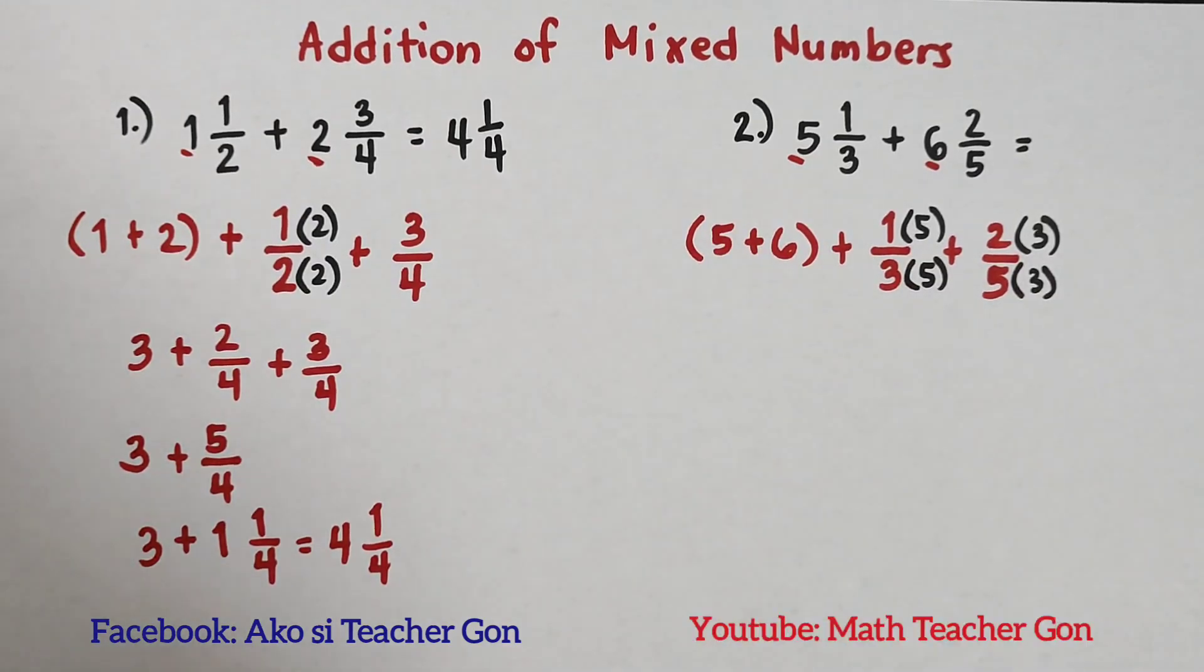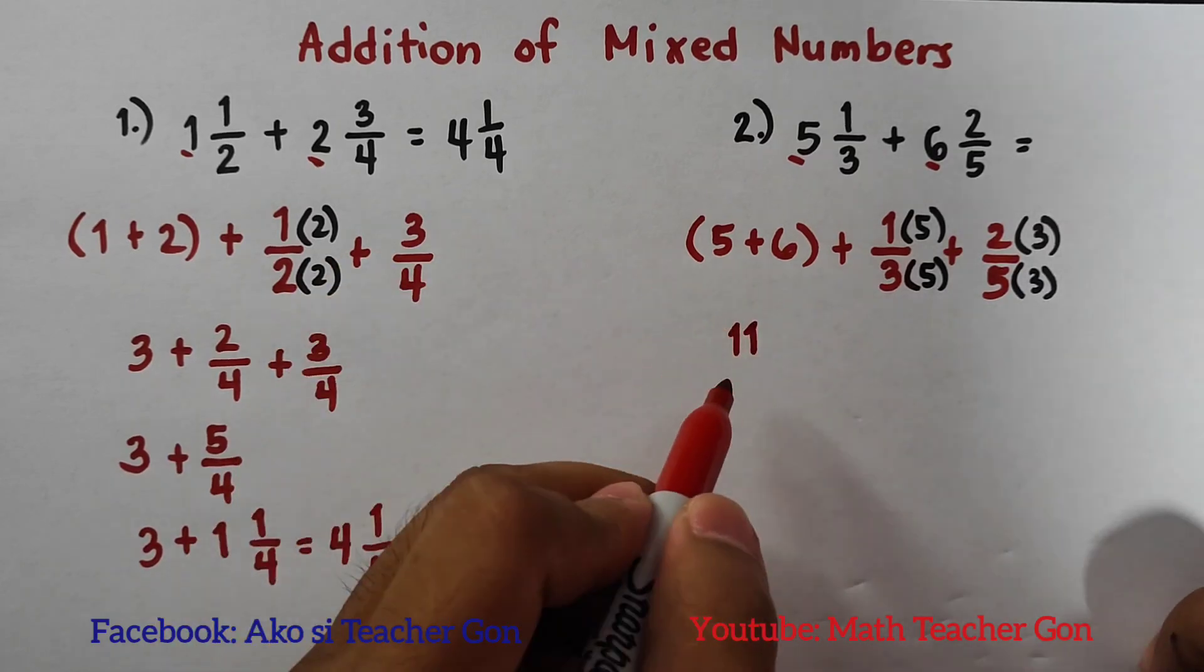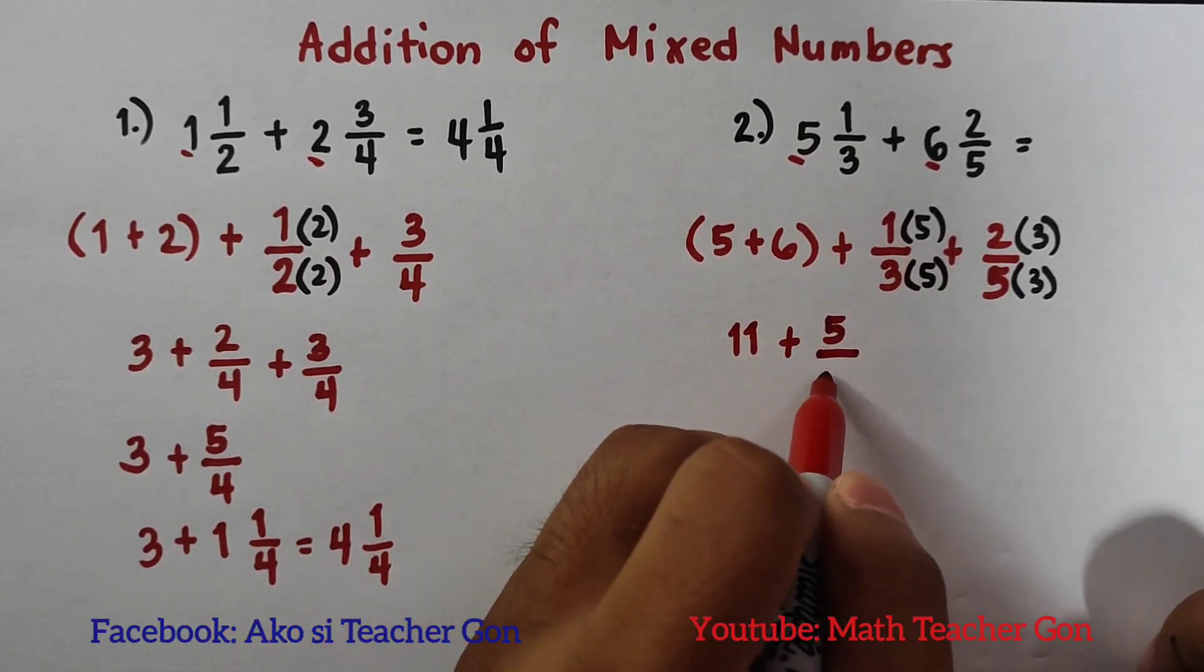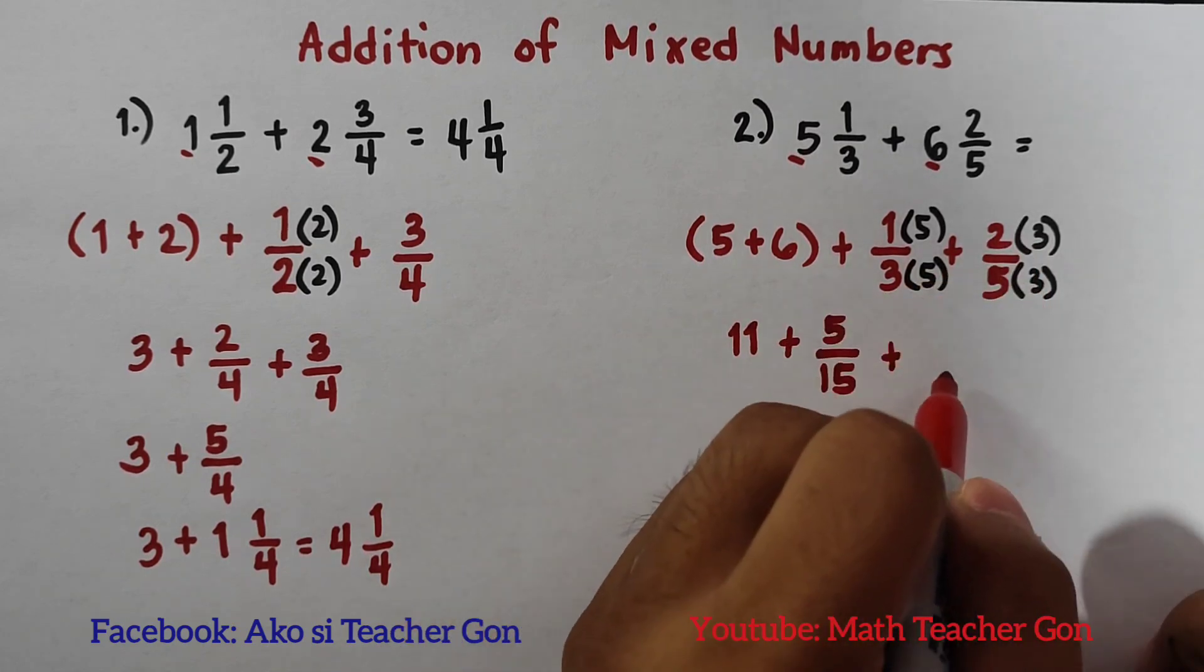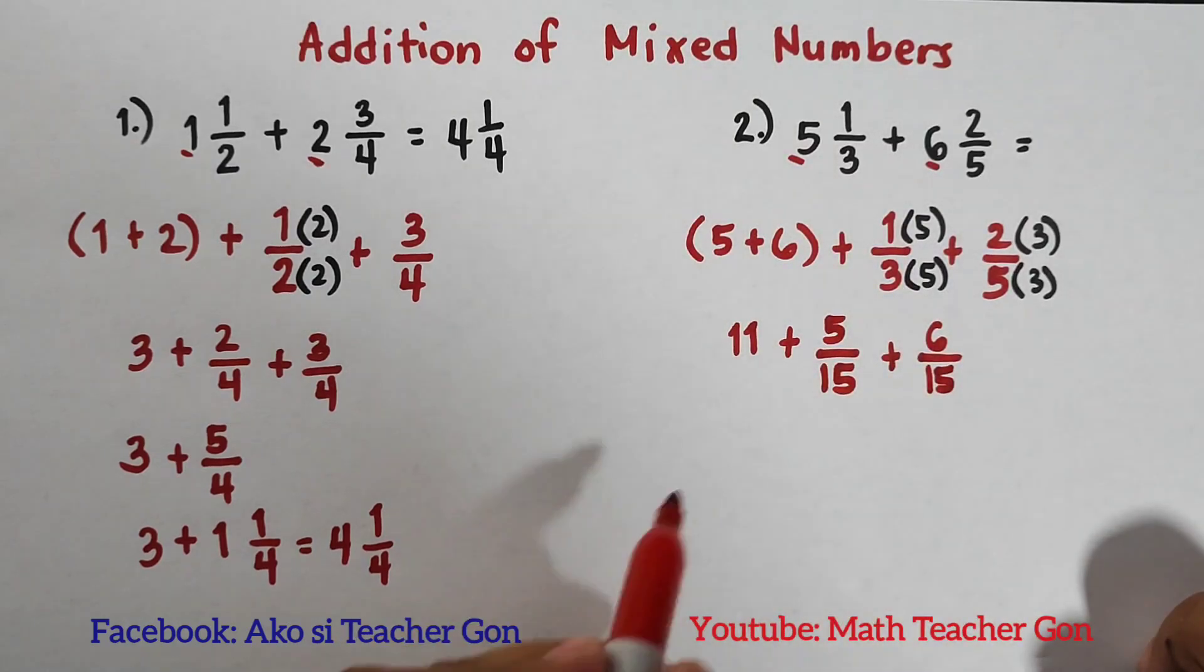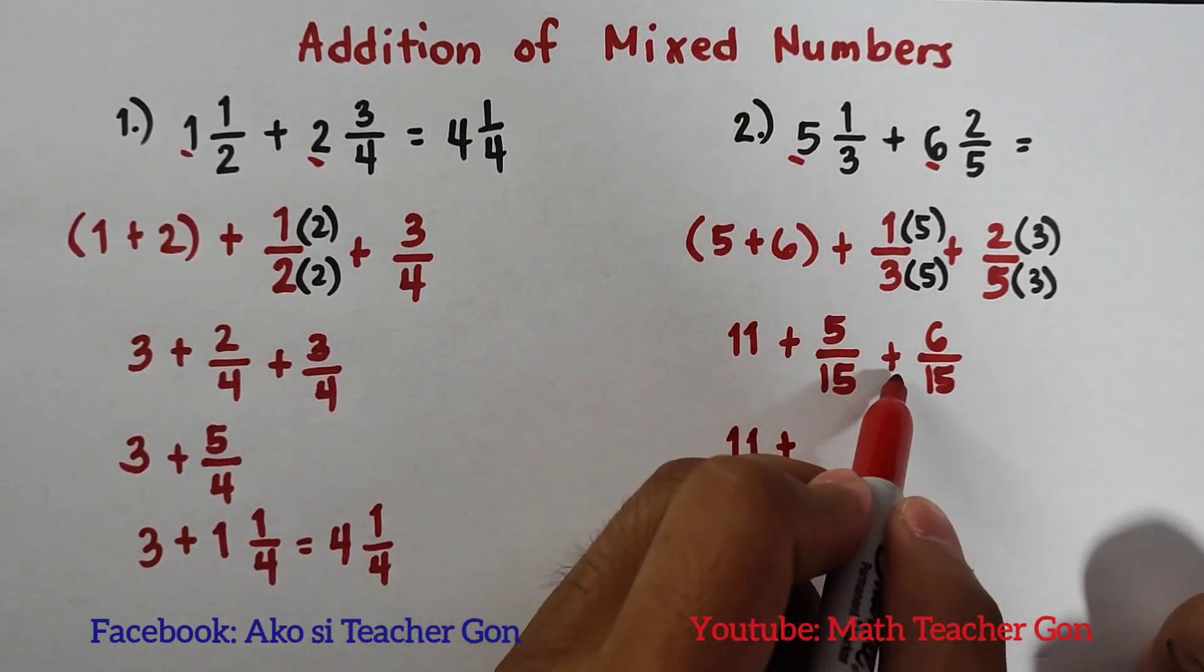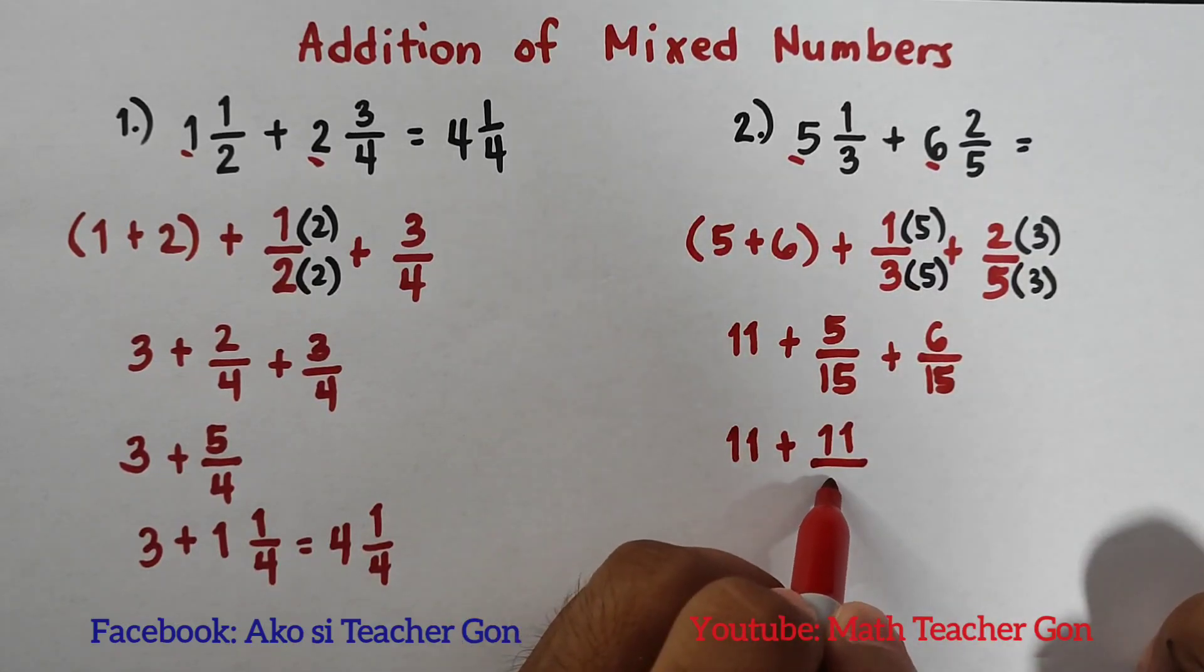Now we can add these two whole numbers. We have 5 + 6 which is 11. And here this will become 5/15 plus 2 × 3 which is 6 over 15. This is 11 + (5 + 6) which is 11 over, copy your common denominator which is 15.